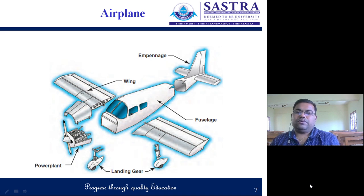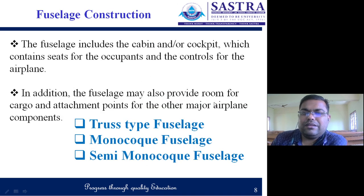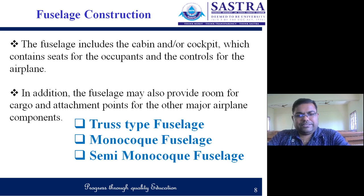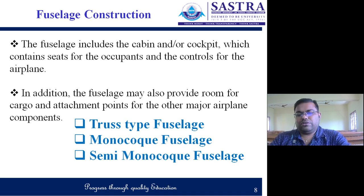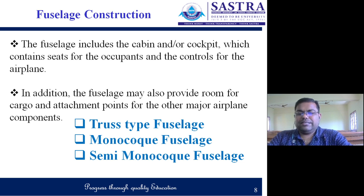Today's discussion focuses on the wing and fuselage. The fuselage includes the cabin and cockpit, which contains seats for occupants and controls of the airplane, and may also provide room for cargo and attachment points for other major airplane components. There are three kinds of fuselage configurations: truss type, monocoque, and semi-monocoque.